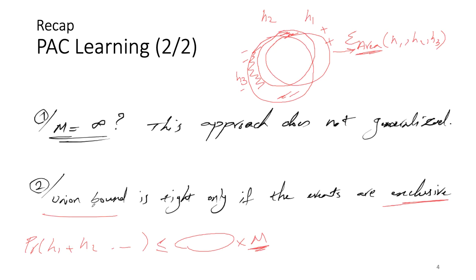That's what we're going to talk about today: how we can replace M in the union bound with a more representative upper bound.